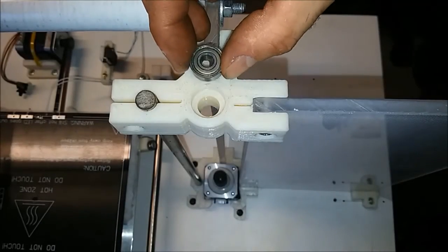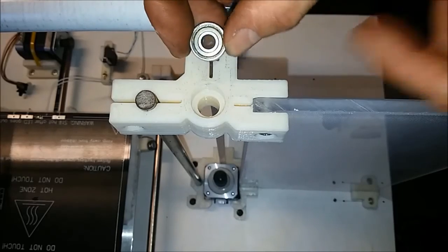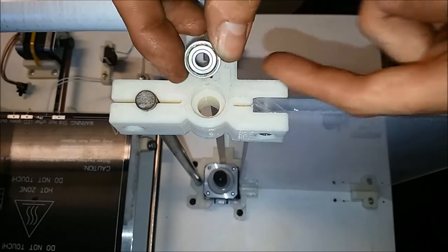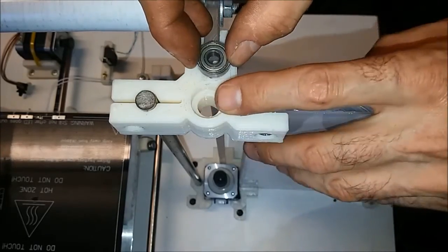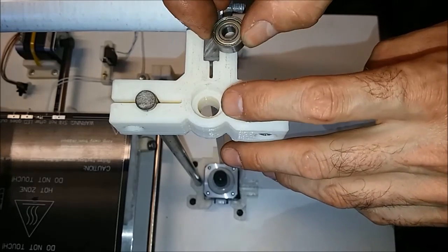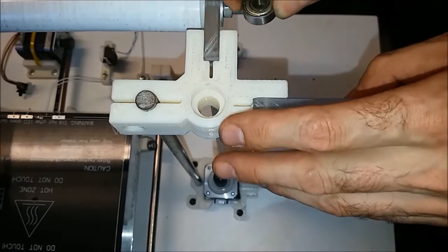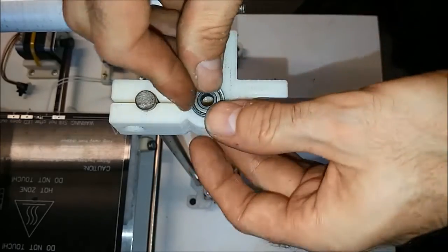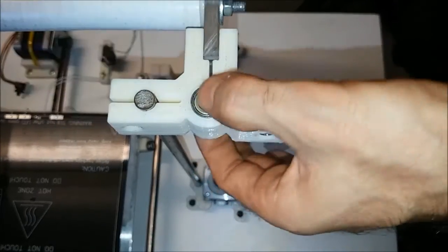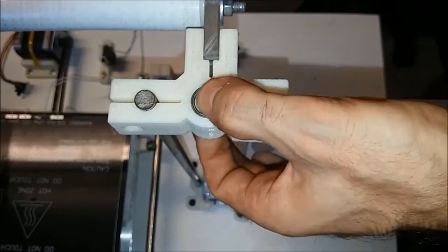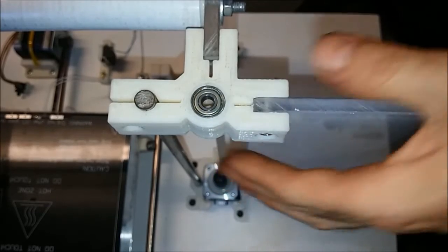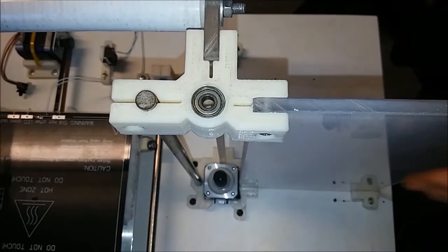We've got a 606ZZ bearing, just a 6mm bearing, internal hole 6mm. We're going to press that into the top of the Z-axis bracket. Just put it on there. Usually you can just push it in by hand, but if it doesn't go in easily you can press it in with some vise grips or a clamp. That's put in.